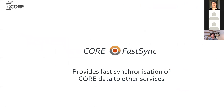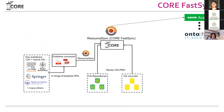Another tool CORE provides is called Core FastSync, which provides fast synchronization of CORE data to anyone interested in doing something with them. The Core Publisher Connector is used for ingestion by CORE, but we were also asked by others who wanted to stay synchronized with everything in CORE. These are typically commercial players.